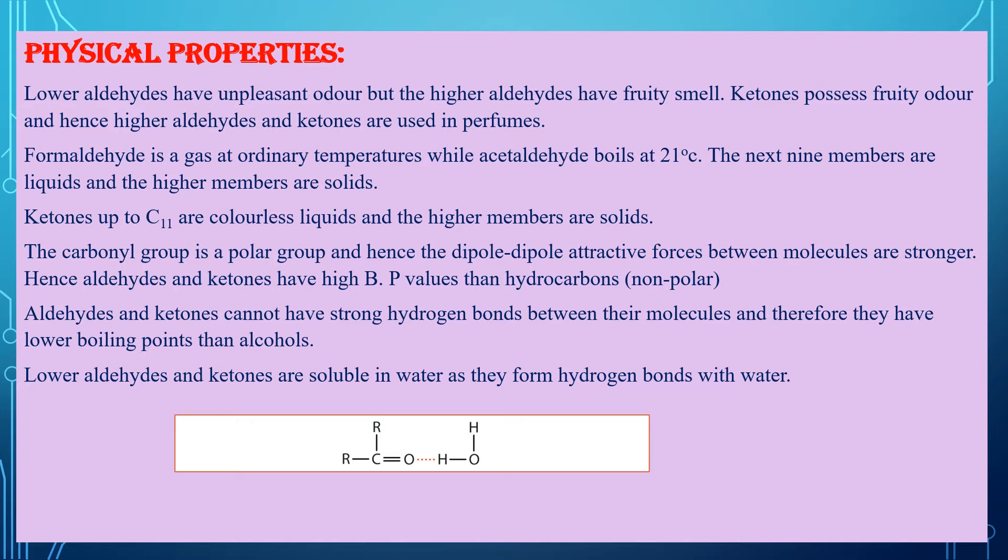Next point: ketones up to C11 — that is, ketones consisting of up to 11 carbons — are all liquids and are also colorless. They do not possess any color. After C11, all the higher members of ketones are solids.